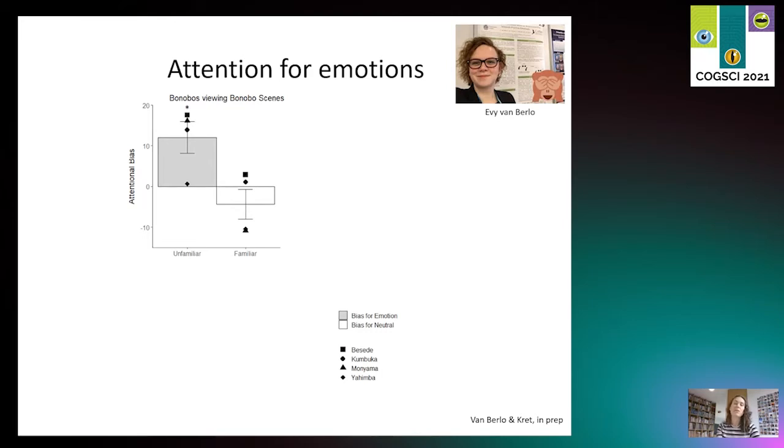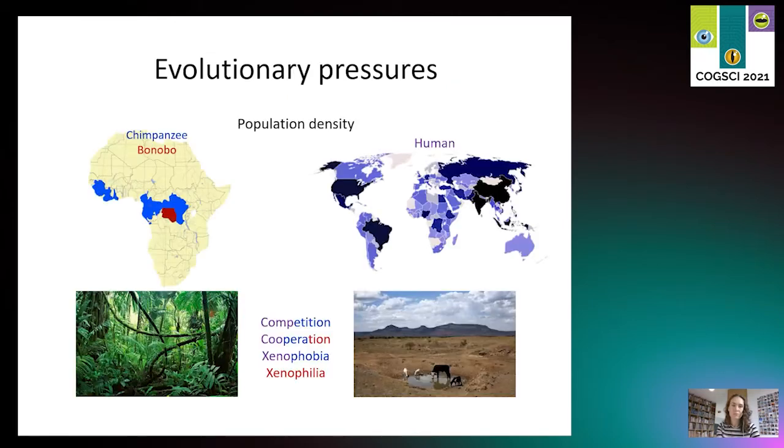So why do humans attend more to the expressions of familiar others and bonobos to the expression of unfamiliar others? I'd like to give you an evolutionary explanation—it's very speculative, but I think it's important to think about this question. If you look at the small red area in the middle of Africa, this is the area bonobos live in and where they evolved. It's a relatively safe environment with plenty of food sources, and there's not much competition with other groups of bonobos.